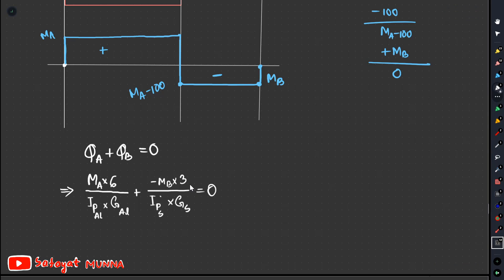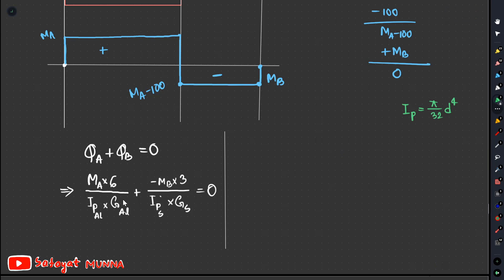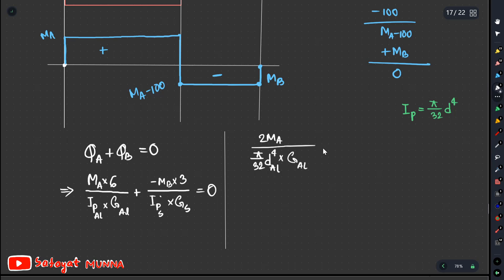We calculate IP using the formula: IP = (pi/32) × d^4. The units for IP are inches to the fourth power. We then use the G values (shear modulus) for aluminum and steel respectively, and set up the full compatibility equation with all units accounted for.